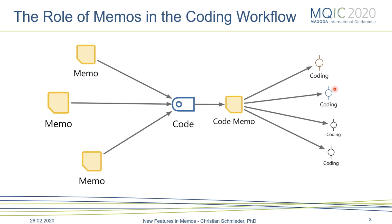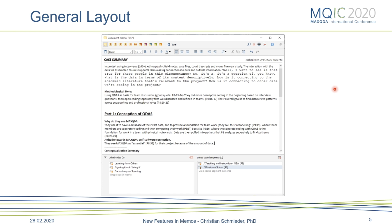One very helpful thing about a workflow like this is that you can actually link codes to memos together. Here you see a memo, and you can see the linked codes — which is also not a new function, but a very useful one. For example, the code 'learning from others' or the code 'figuring it out' can be linked to this memo. This helps connect what I'm writing with what I'm trying to define.